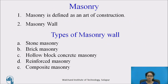Masonry is defined as an art of construction. This was the oldest method of construction generally known to humans. Masonry is the process of laying one masonry unit over another unit with mortar to form a uniform bonding so that it can form an element or a member of a building. It is commonly used for masonry walls and buildings.